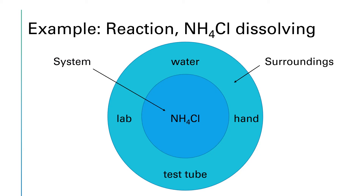Here's another way of looking at this very specific example. The specific example is ammonium chloride dissolving, and this is an endothermic process. Being an endothermic process, as the ammonium chloride dissolves, it absorbs heat from its surroundings. Energy flows from the surroundings into our system. Our surroundings are the water, your hand, the test tube, and the lab. The system is the ammonium chloride. So energy is being transferred from the surroundings into our system, which increases the energy content of the ammonium chloride — that makes it endothermic.